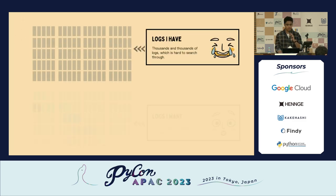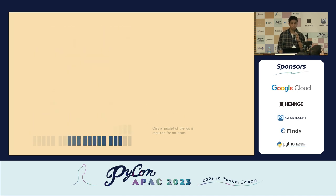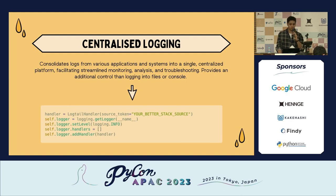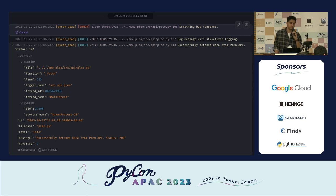If you run this, you get structured logs. But the major issue is when working with big applications, you have thousands of log files and you want specific logs. So instead of a localized version of log files, you prefer centralized logging. You can use something like an ELK stack. For simplicity, I'm using the BetterStack platform, which adds all log files in a structured way to a dashboard showing file names, functions, methods, process IDs, log levels, and severity levels.